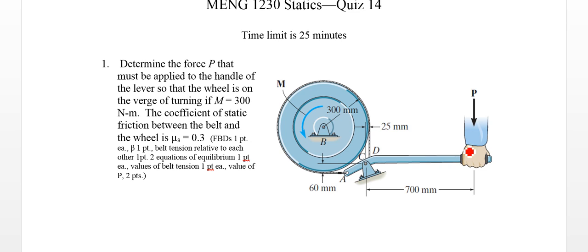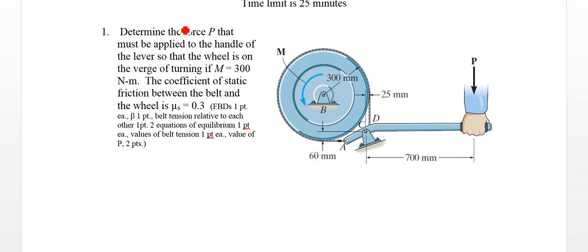The arm pivots at point C. We're applying a force P, seven-tenths of a meter from that point C pivot. So what we're asked here is to determine that force that we're applying.